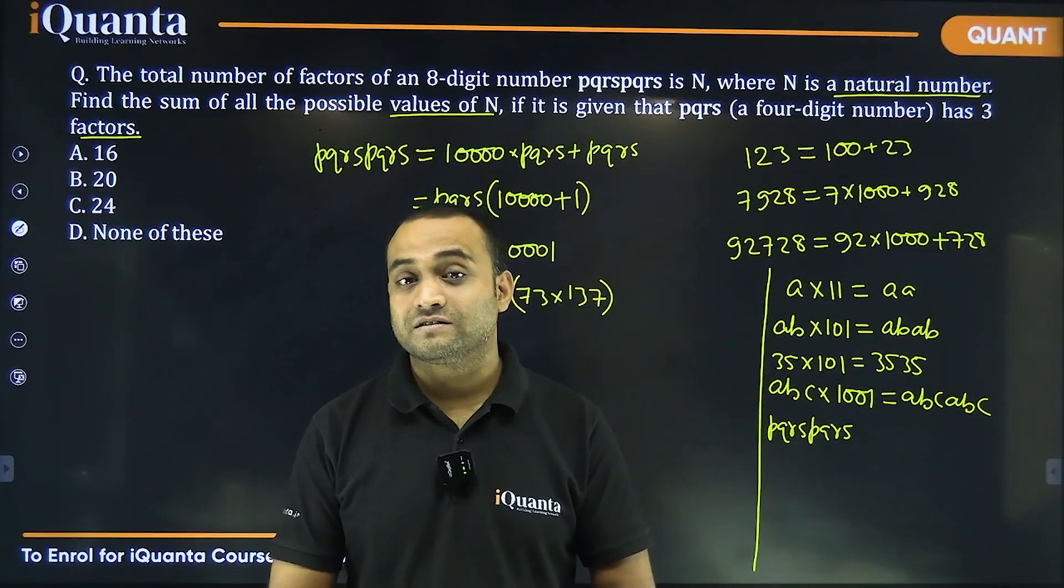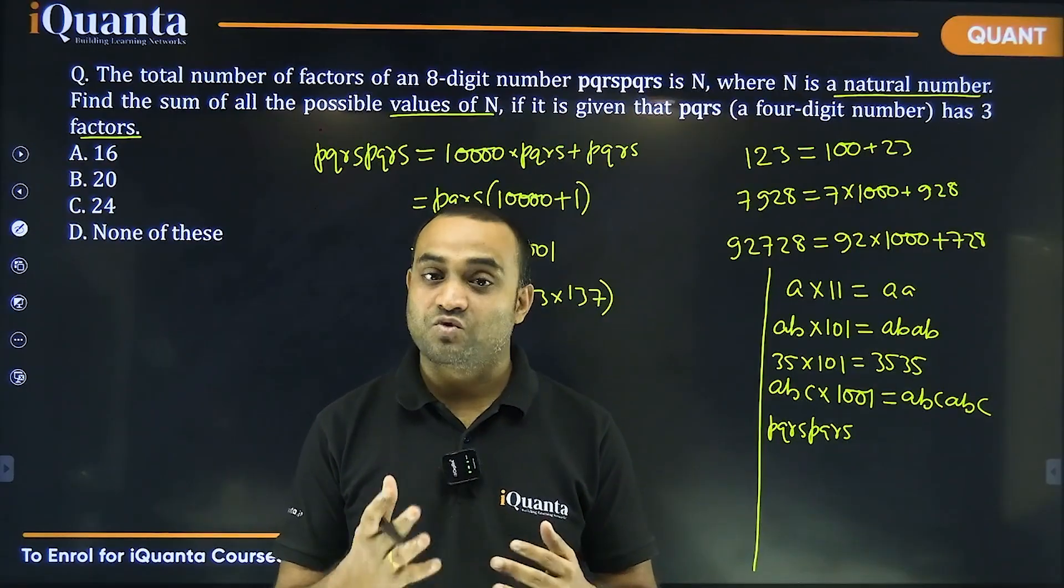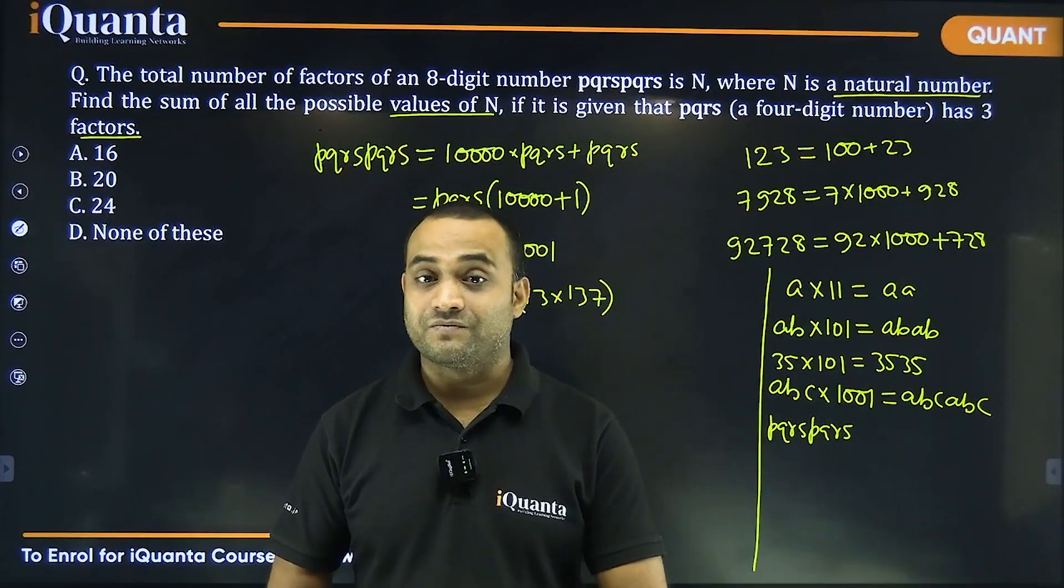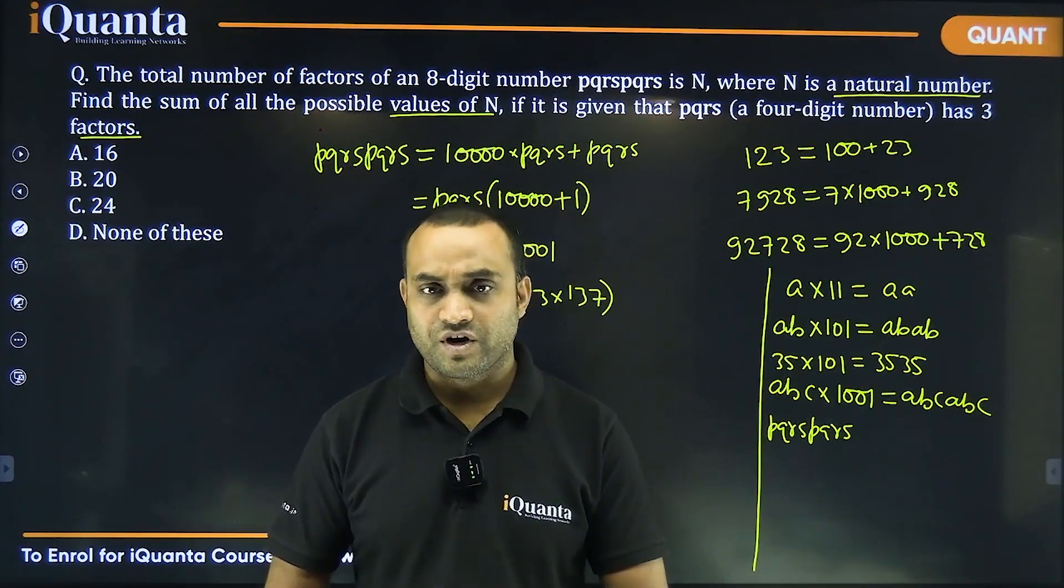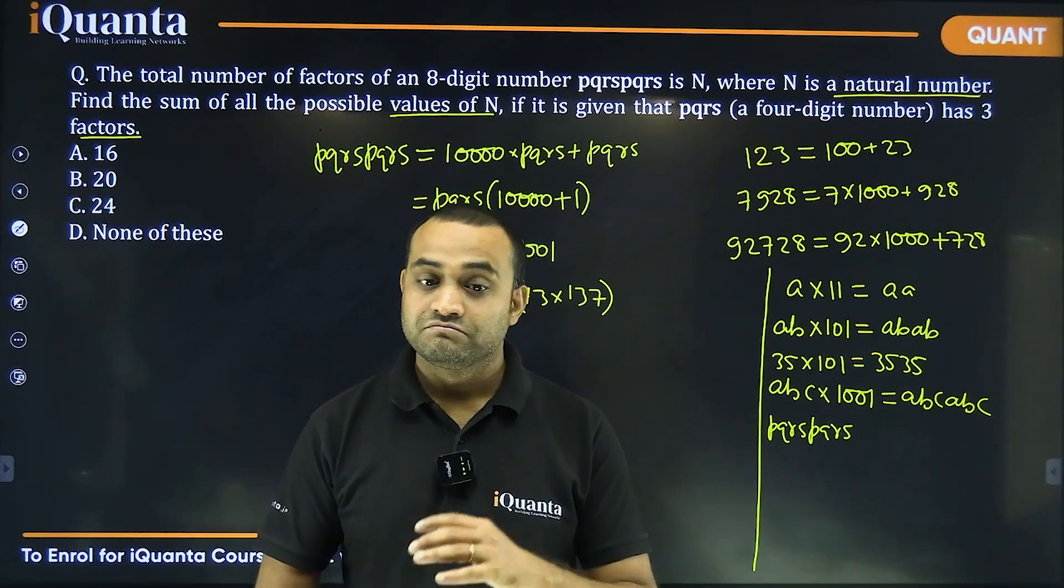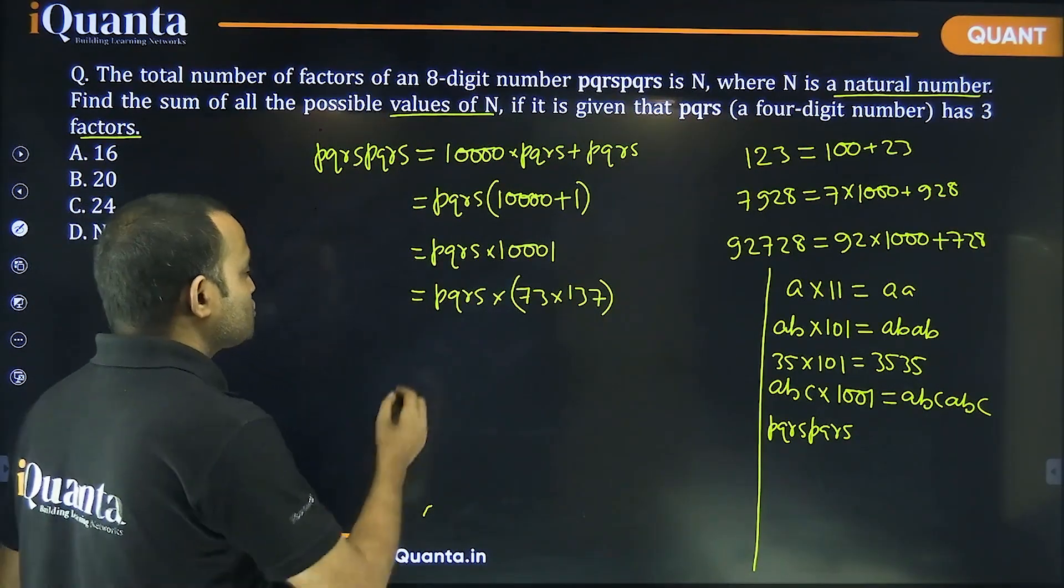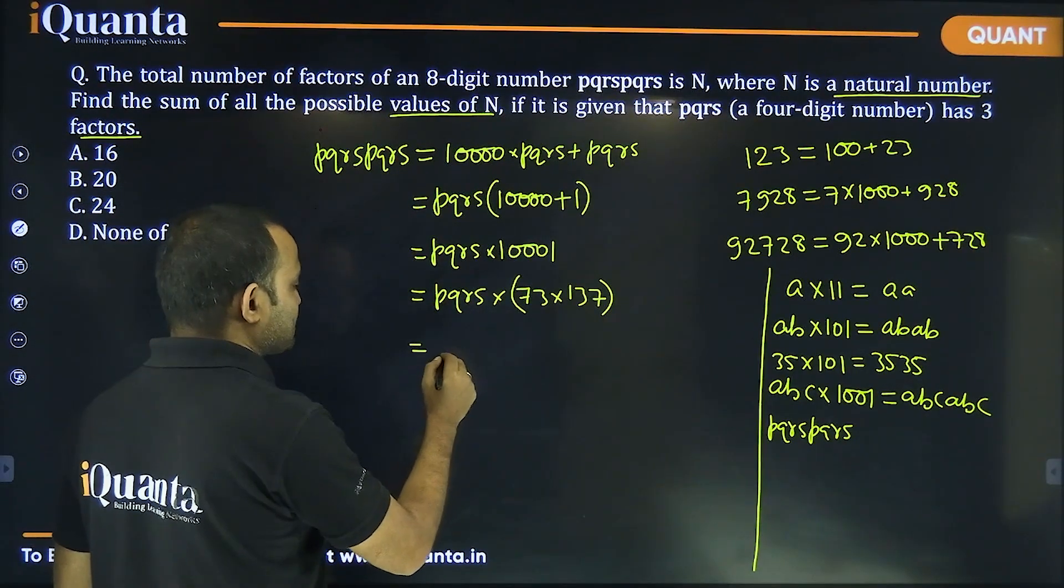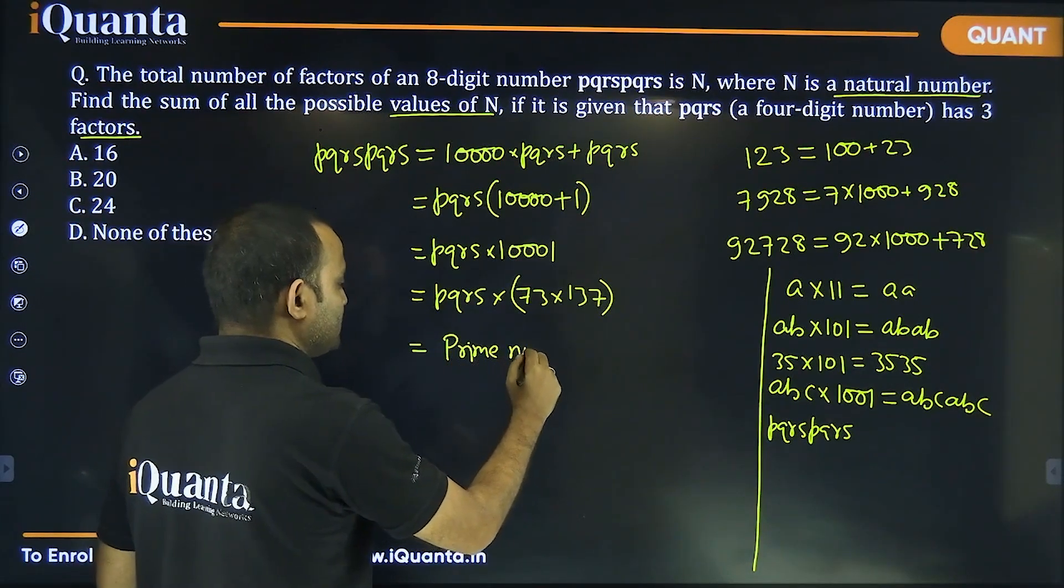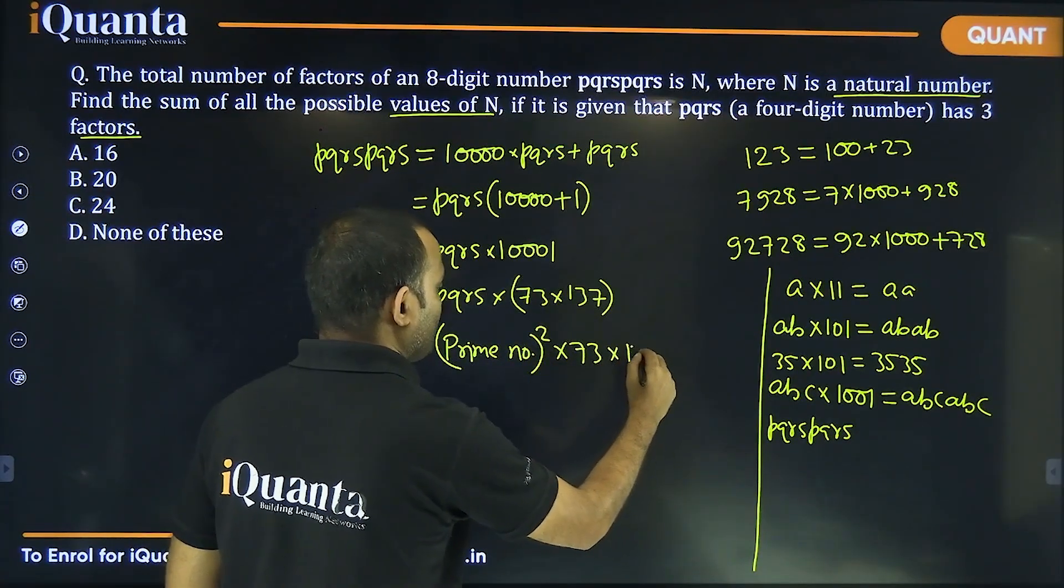So, what kind of perfect squares have three factors? A number which can be written as prime number square. Any number which can be written as a square of a prime number will have exactly three factors. Like 11 squared is 121, 13 squared is 169, 19 squared is 361. All of these numbers will have three factors. So, basically, PQRS is nothing but prime number squared.